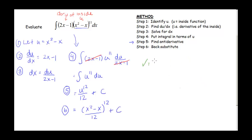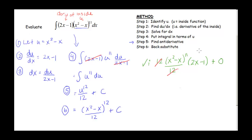Let's check the answer. Taking the derivative: bring down the 12, giving 12 times (x squared minus x) to the 11th over 12, times the derivative of the inside which is (2x minus 1), plus 0. The 12's cancel out, leaving (x squared minus x) to the 11th times (2x minus 1), which matches the original integrand. Come back for more examples in the second video on substitution.